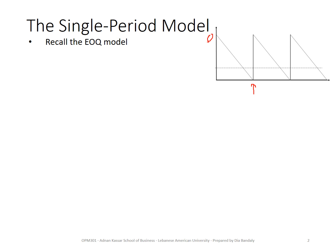Now, what happens if demand did not follow that black line but follows the red line? When we receive our new shipment, we have some quantity still on hand. Is it a problem? No — we simply receive the new shipment and our inventory goes up to a higher level than before. It's not a problem at all, because the EOQ model applies for products that sell continuously. If we see that surpluses are repeating, we can simply revise our order quantity.